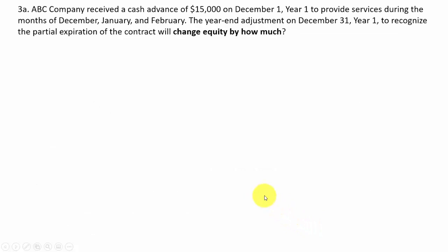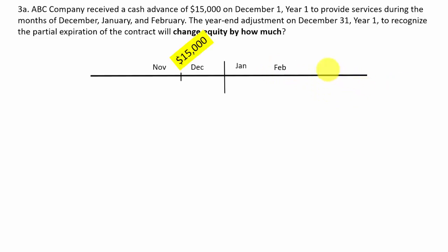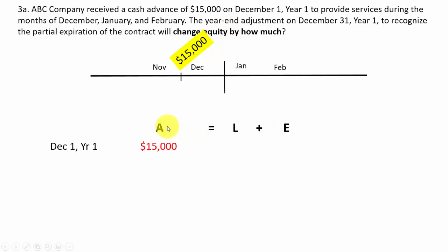Next question asks how much did equity change. ABC company received a cash advance of $15,000 on December 1st, year one, to provide services during December, January, and February. Let's put this on a timeline. We'd increase assets or cash by $15,000 and also increase liabilities $15,000, because on December 1st we got the money but haven't provided any services yet — those services run through December, January, and February.